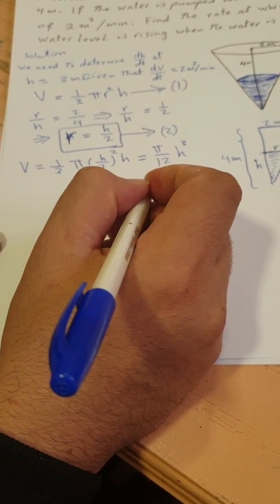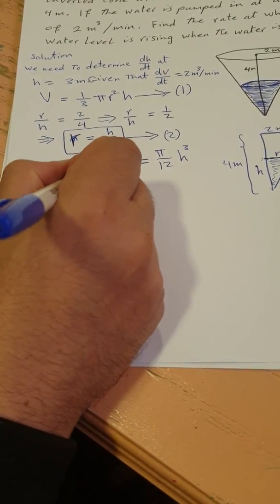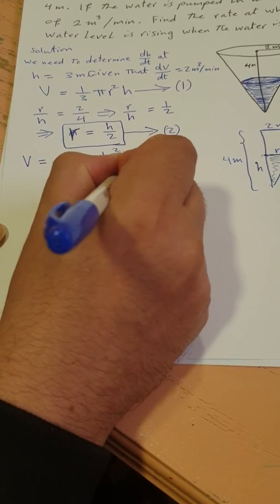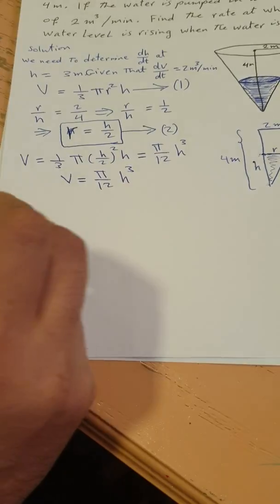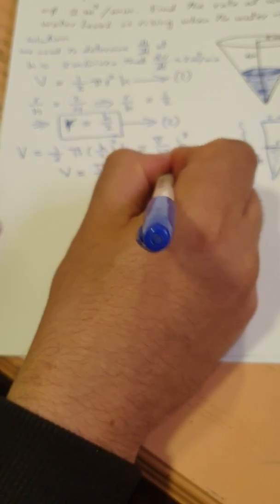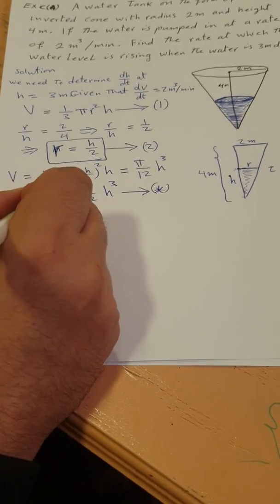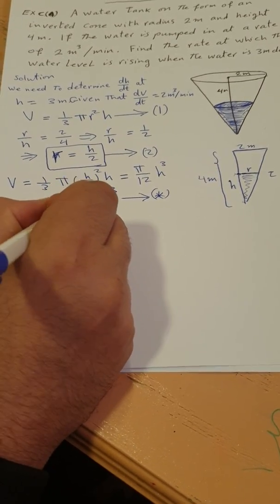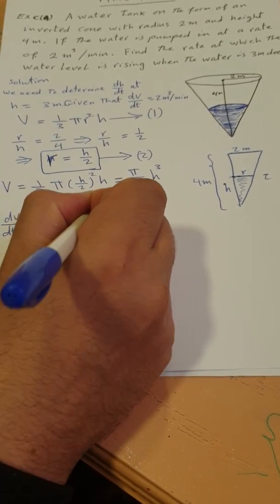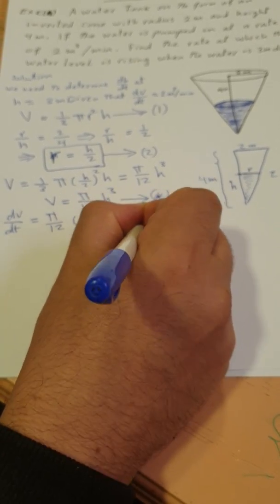Now to find dh/dt, we differentiate both sides of V equals pi over 12 times h cubed with respect to time. Differentiating, we get dV/dt equals pi over 12 times 3h squared times dh/dt, which simplifies to dV/dt equals pi over 4 times h squared times dh/dt.